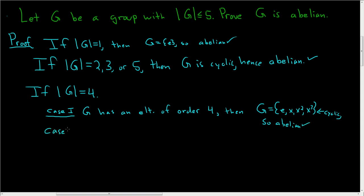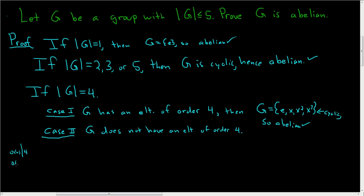Case 2: G does not have an element of order 4. We know the order of any element must divide the order of G, so it must divide 4, giving choices 1, 2, or 4. Since there's no element of order 4, every element has order 1 or 2.